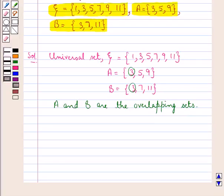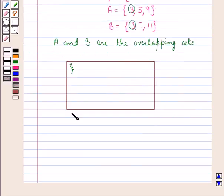So first of all let us draw a rectangle to show the universal set Xi. This is the rectangle showing the universal set Xi. Now we will draw two intersecting circles which would represent the sets A and B.